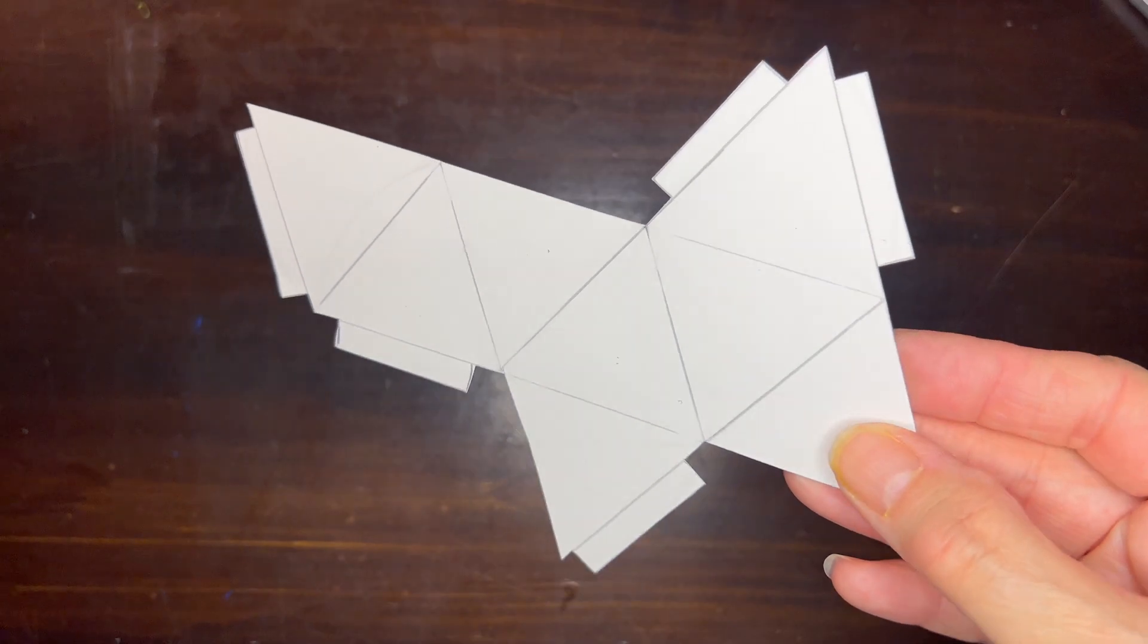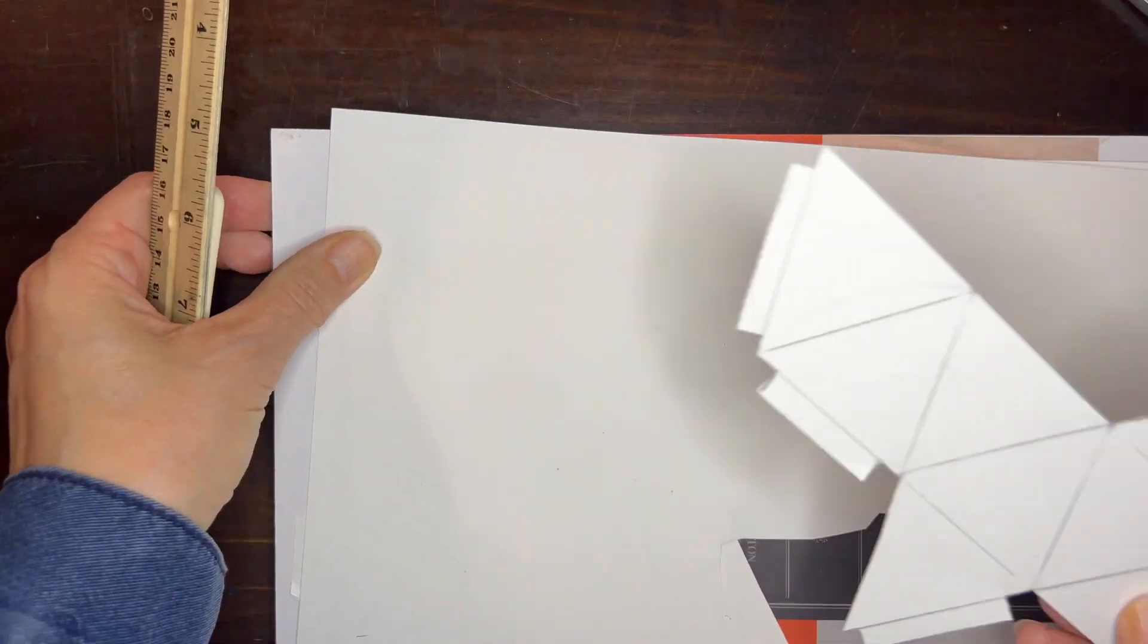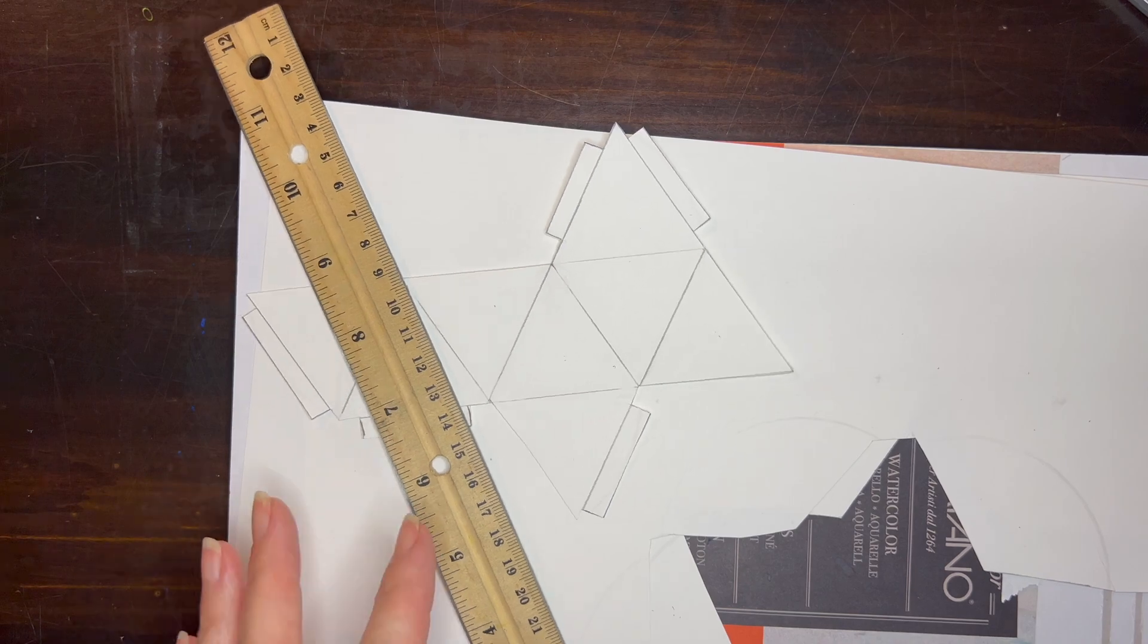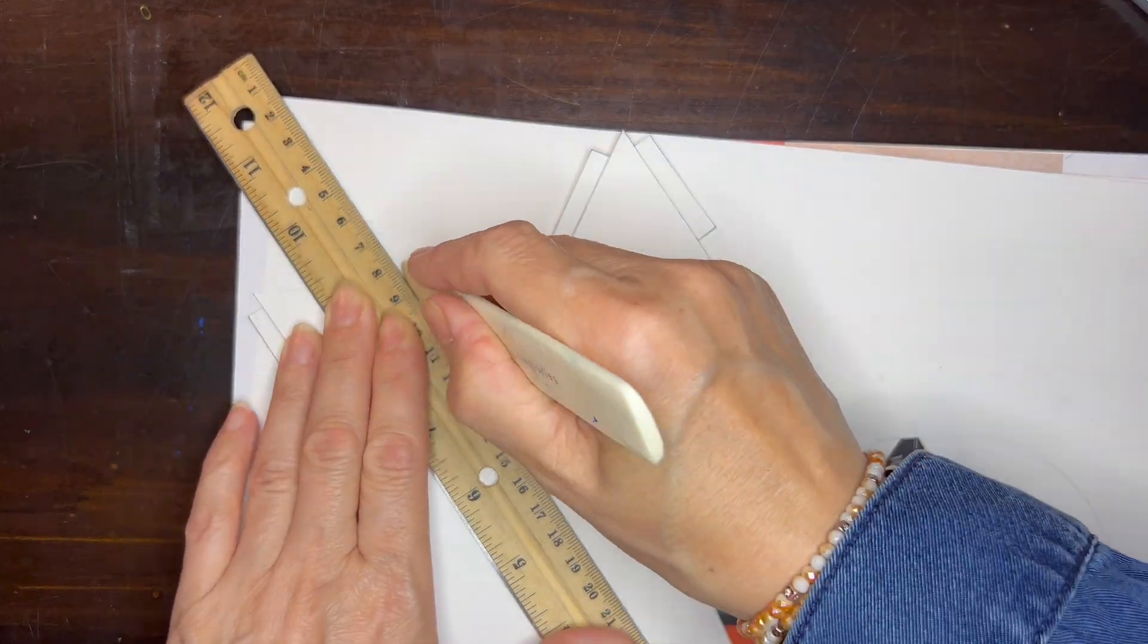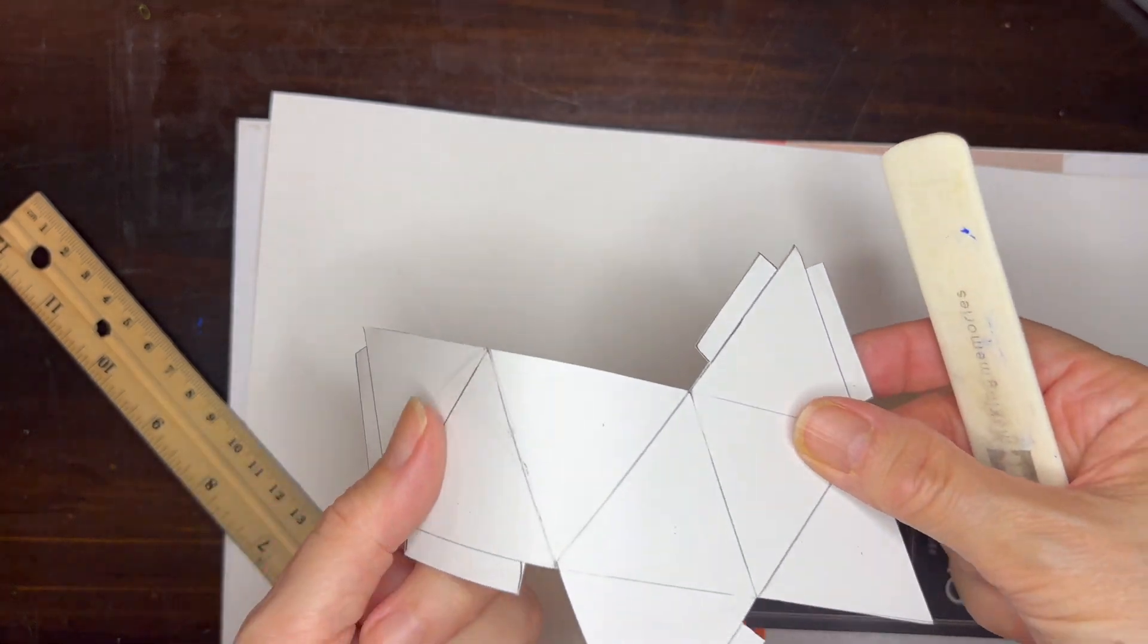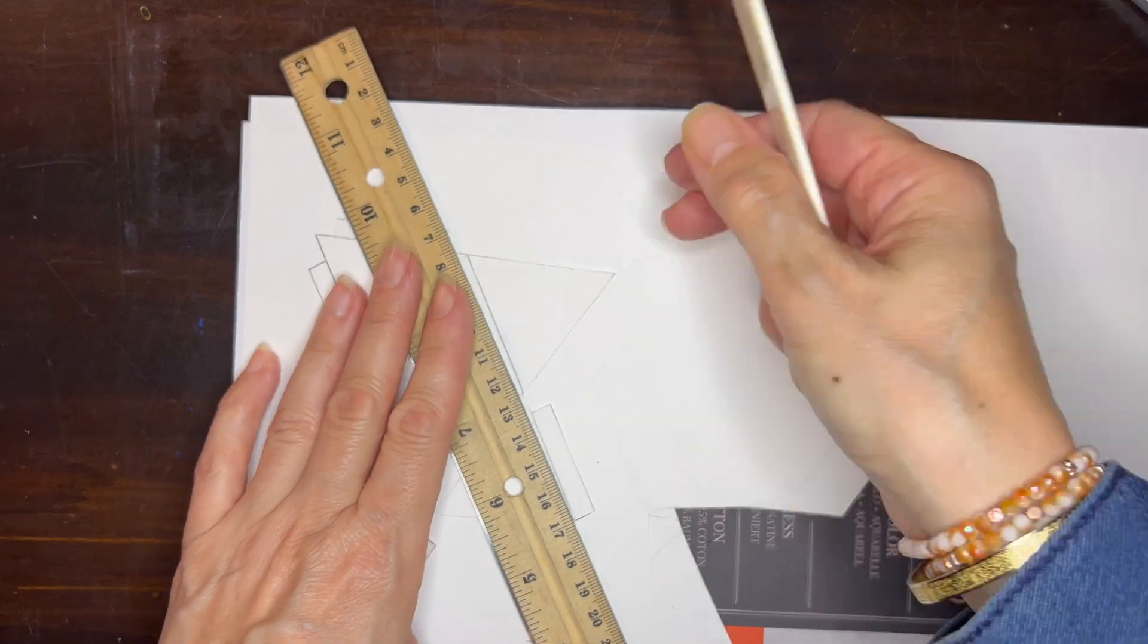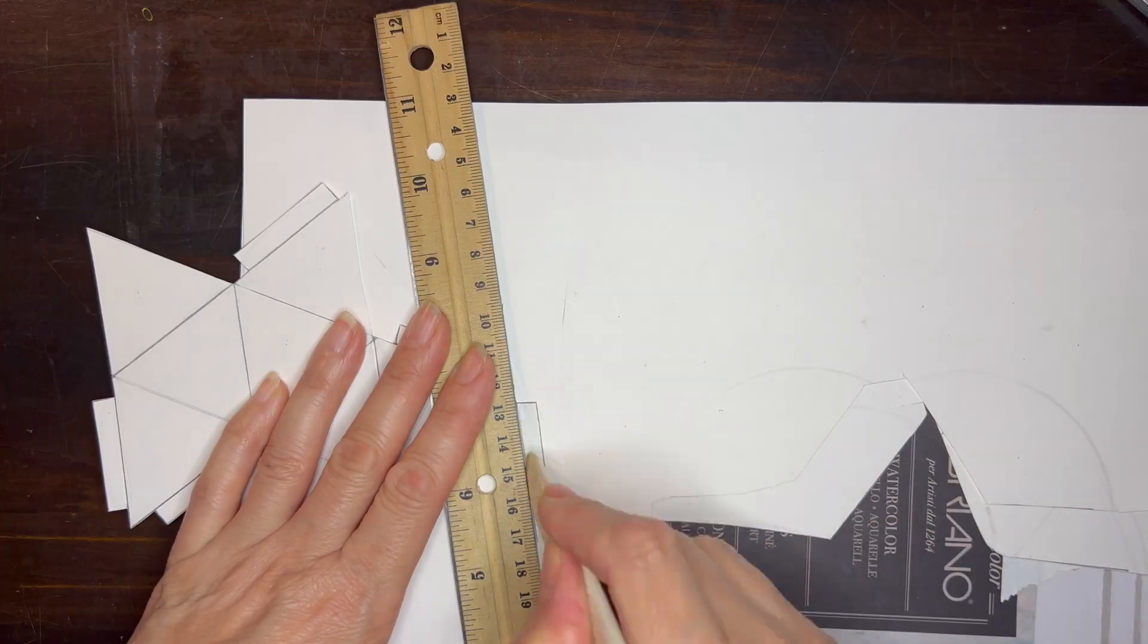Once you've cut around your entire shape it's time to use our bone folder in order to make some crease lines and I'm going to be doing this on top of our image where you can see all of the lines and you want to crease all of them so that they can fold easily especially the tab pieces you want to make sure that you get those as well.